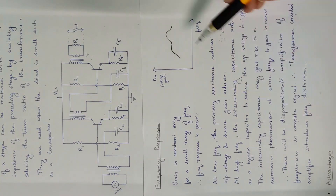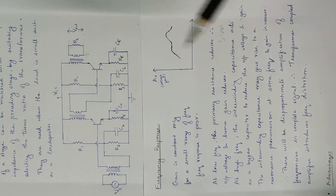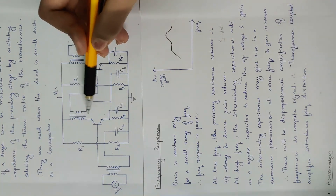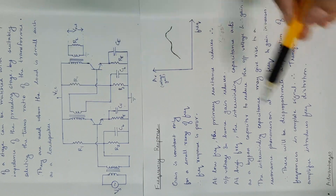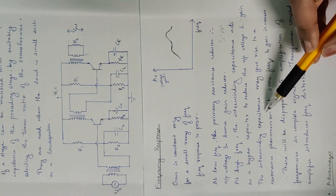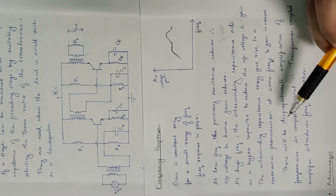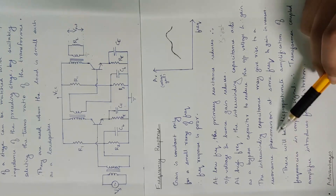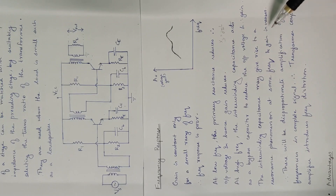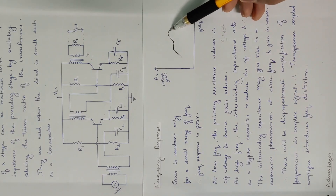The transformer windings have an interwinding capacitance — effectively a capacitor between the windings. This may give rise to a resonance phenomenon where capacitive reactance and inductive reactance are equal and opposite. At resonance, the gain suddenly increases.